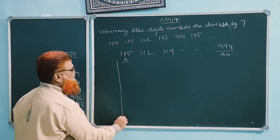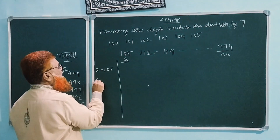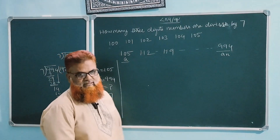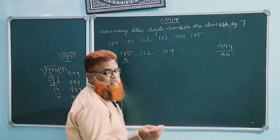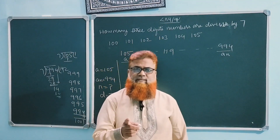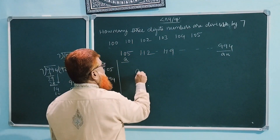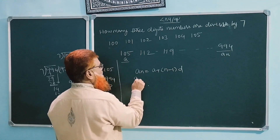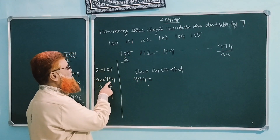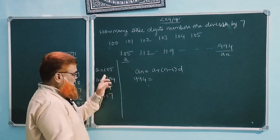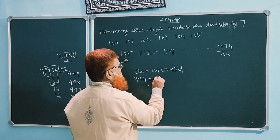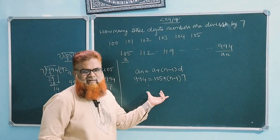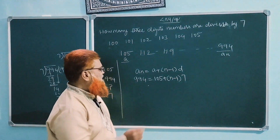Make a list of what is given: A is 105, AN is 994. N we have to find, and D is 7 as the common difference. We write the AN formula: AN = A + (N−1) × D. So 994 = 105 + (N−1) × 7.